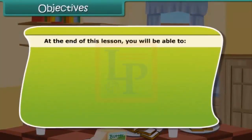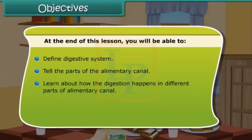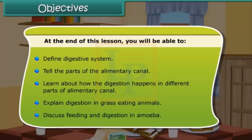At the end of this lesson, you will be able to: define the digestive system, tell the parts of the alimentary canal, learn about how digestion happens in different parts of the alimentary canal, explain digestion in grass-eating animals, and discuss feeding and digestion in amoeba.